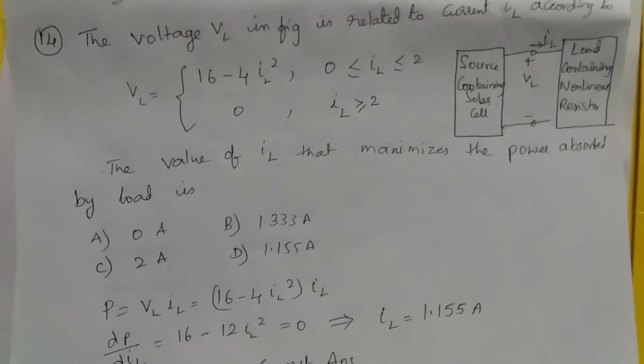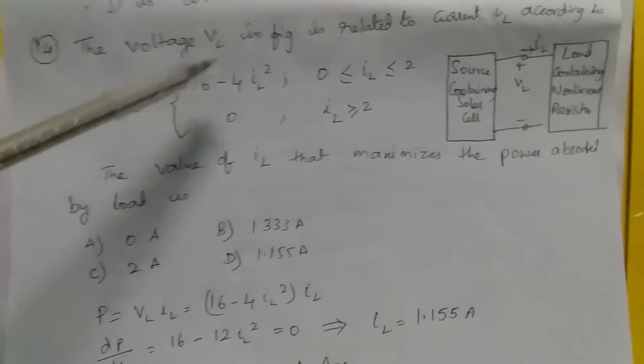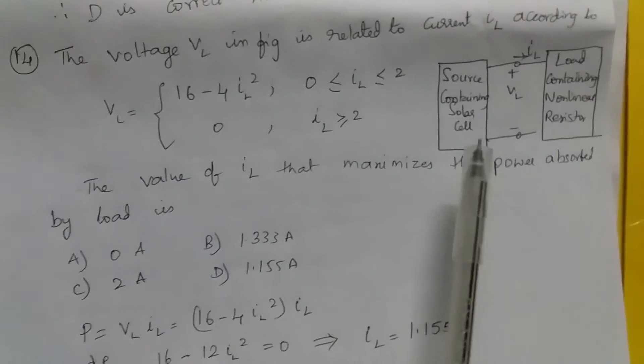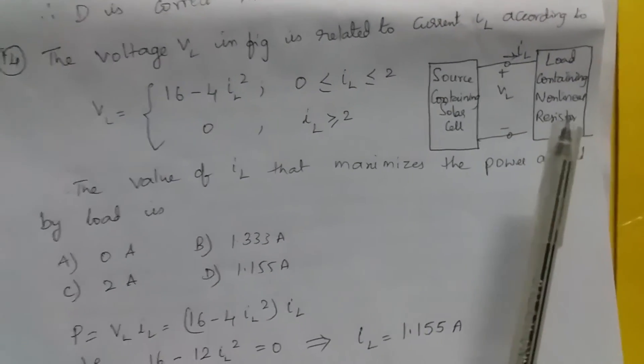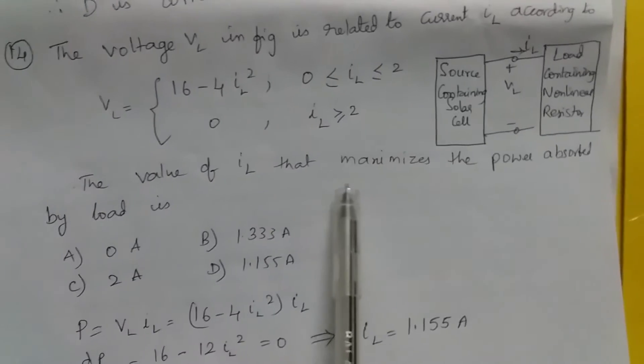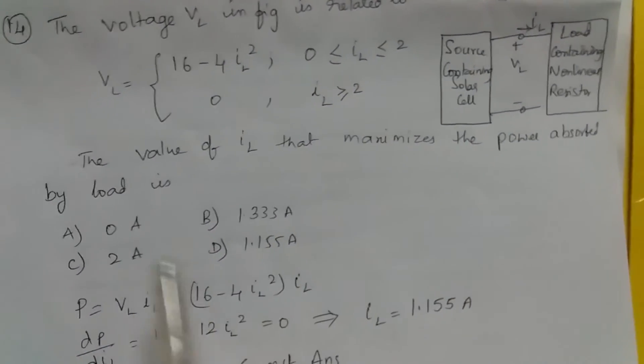The voltage VL in figure is related to current IL according to: VL is given by this formula. This is the circuit supplying VL, and the current IL is flowing in the load containing a non-linear resistor. The value of IL that maximizes the power absorbed by the load is: